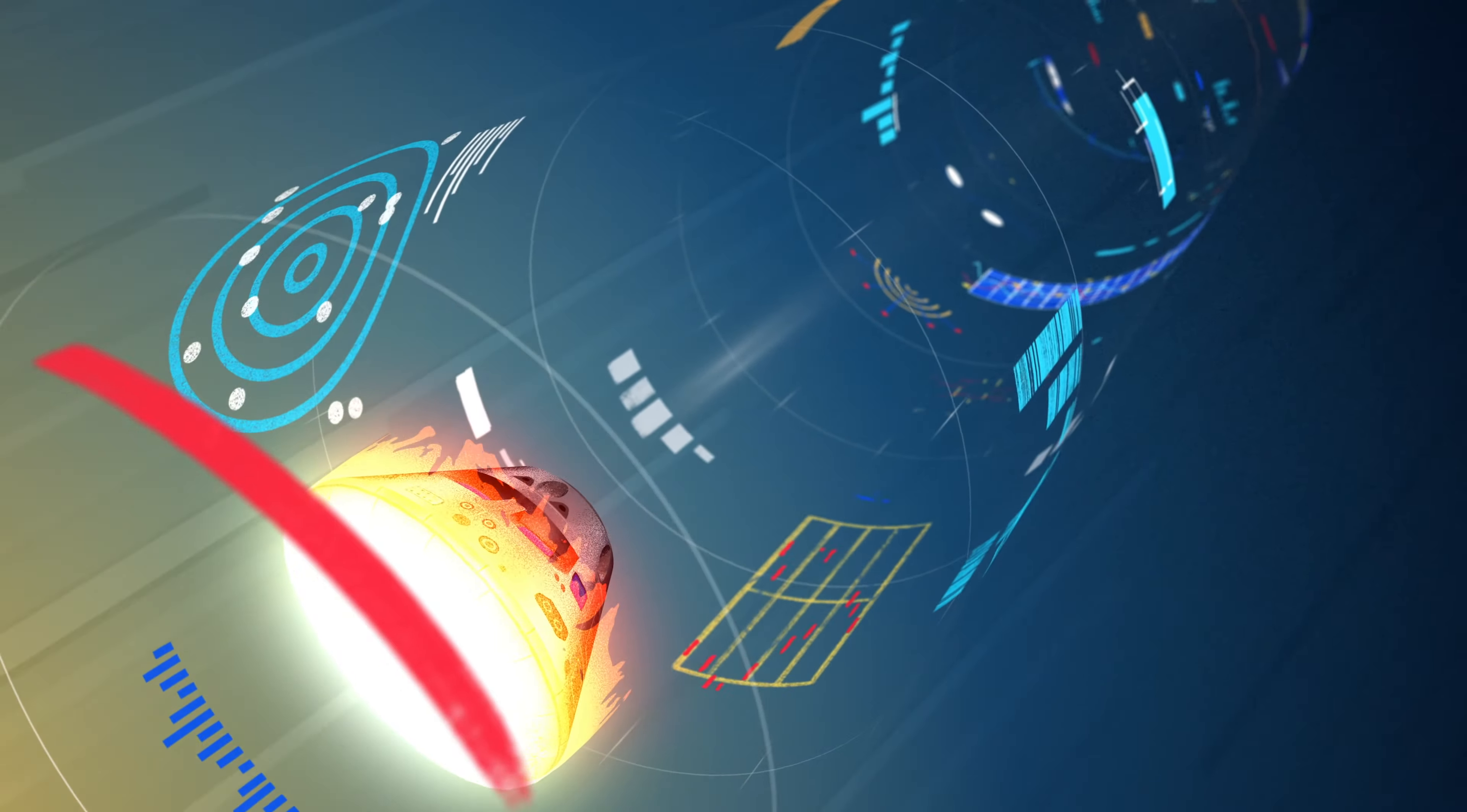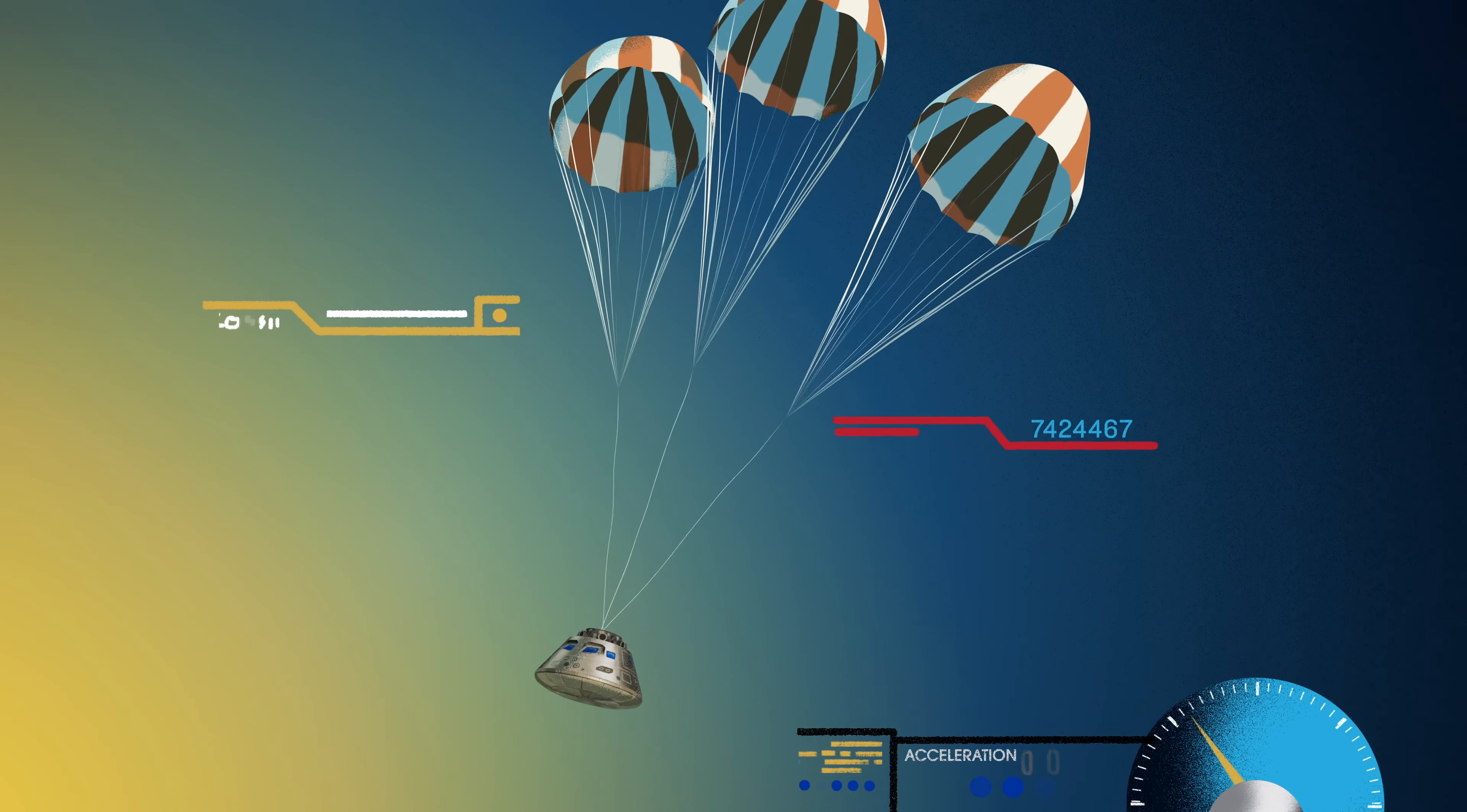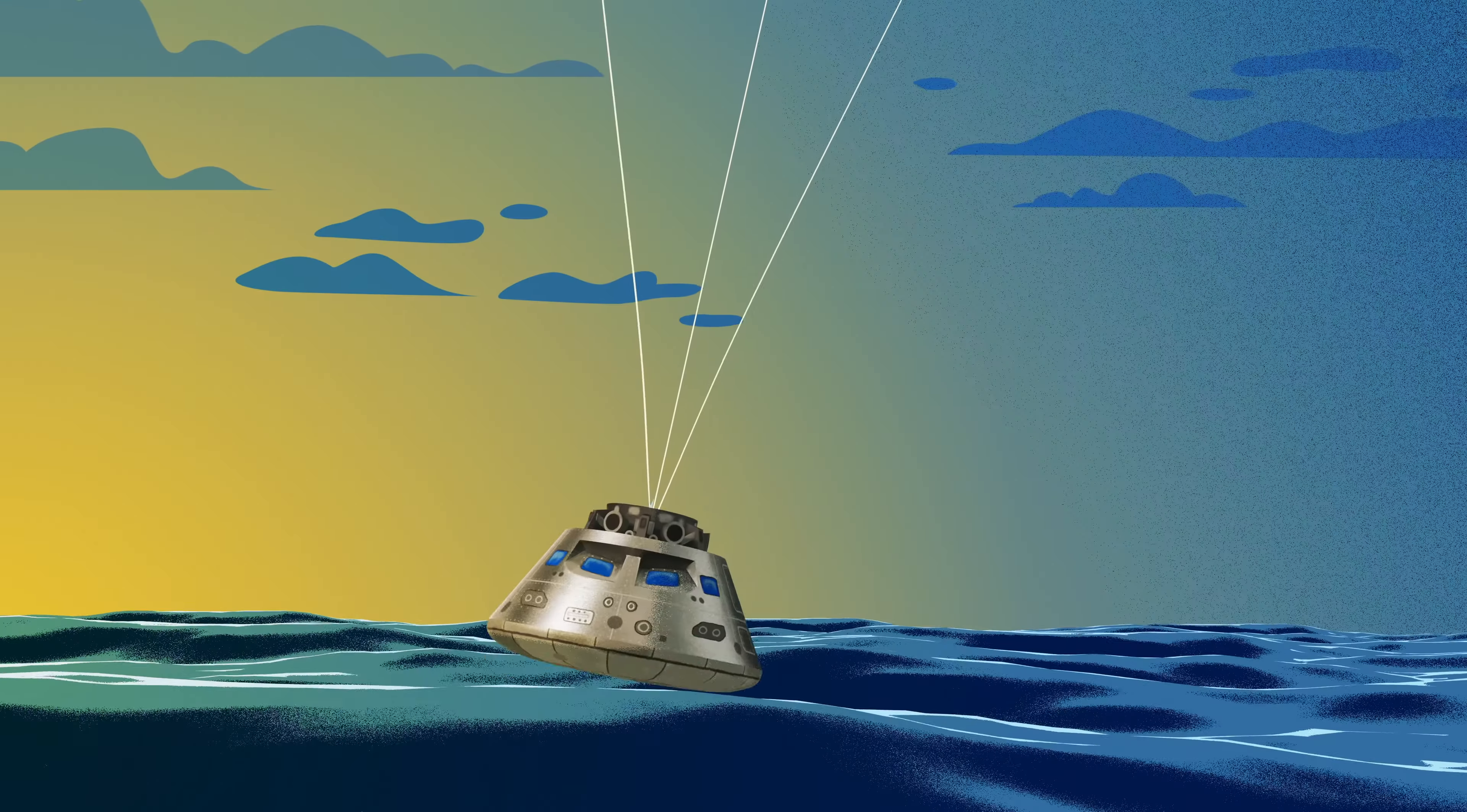With the Orion now at just 300 miles per hour, a series of parachutes uniquely tested and produced for this moment deploy, decelerating the craft to just 20 miles per hour for splashdown.